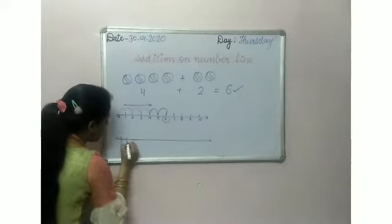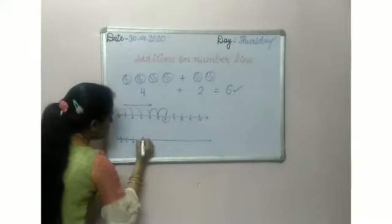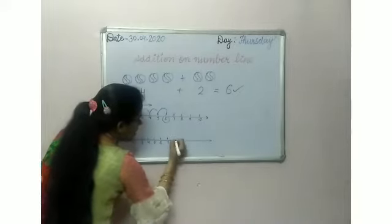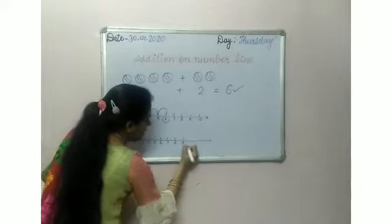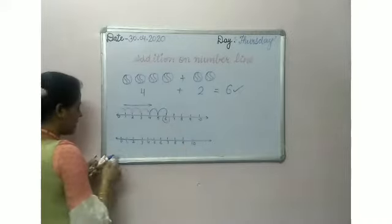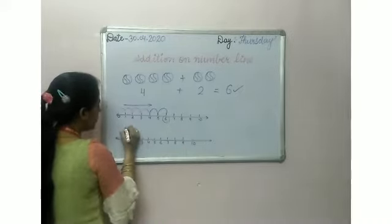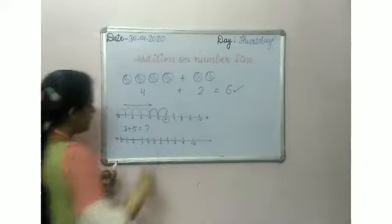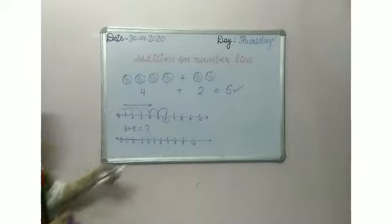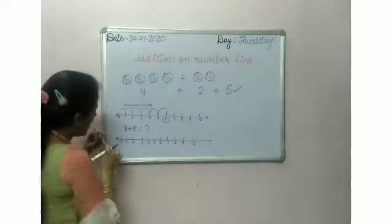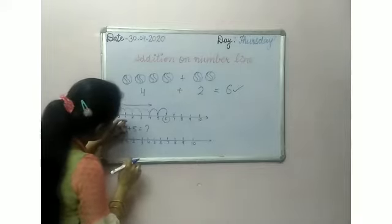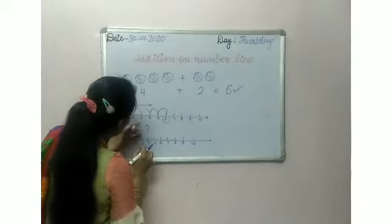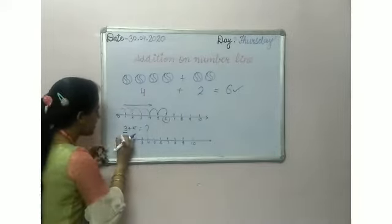Zero, one, two, three, four, five, six, seven, eight, nine, ten. I am writing the number here. I have to find three plus five equal to what? We will jump: zero, one, two, three. My first number is three, so I jump three times — one, two, three.